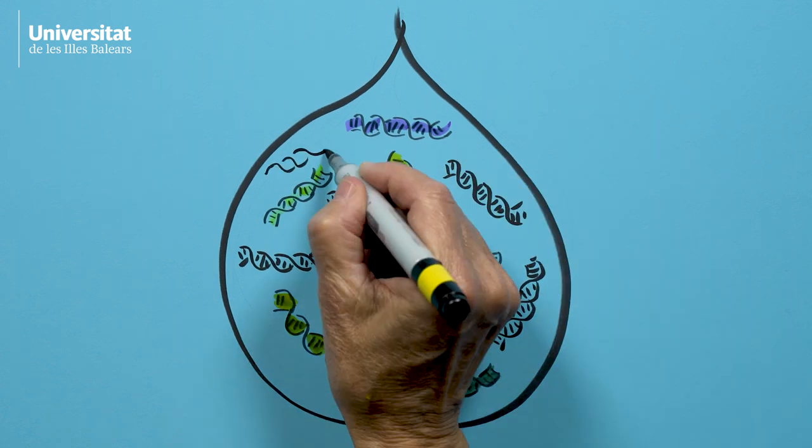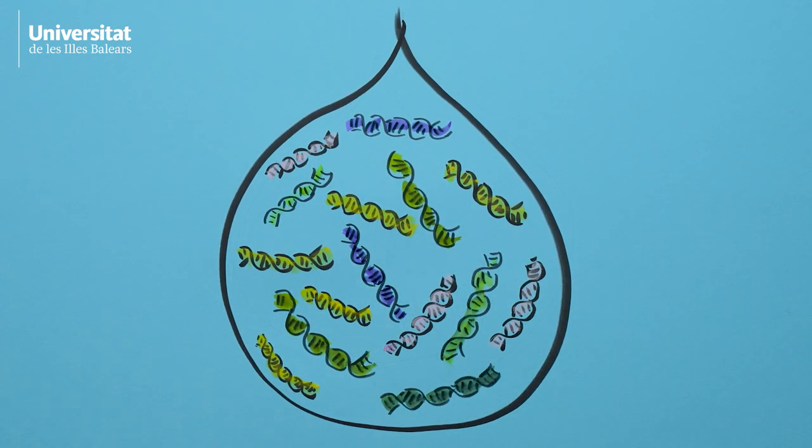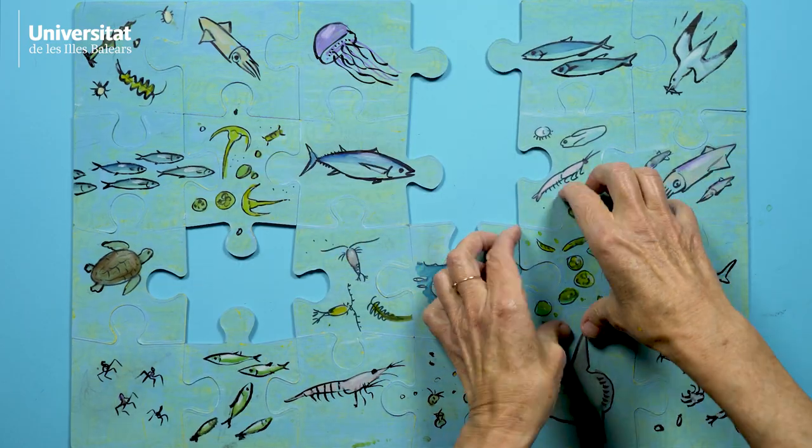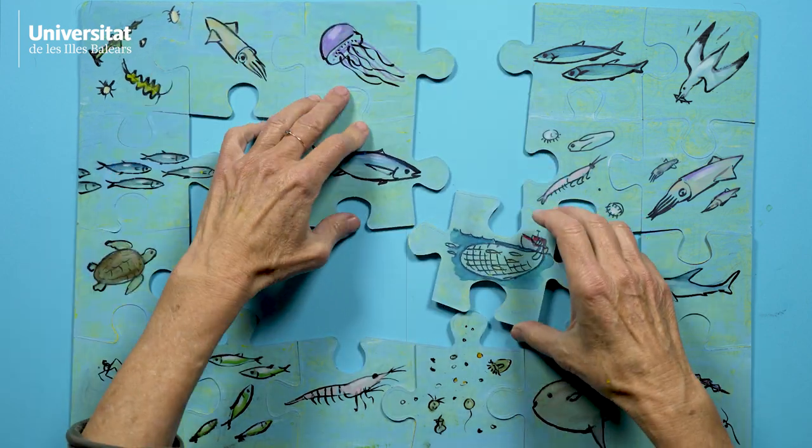Scientists are working to fully understand the invisible part of the web. It's important if we want to know how marine ecosystems might react to such things as climate change and pollution, and if we want to make fishing sustainable in the long run.